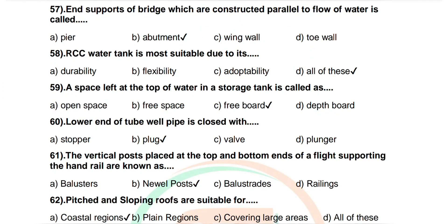Question number 57: End supports of bridge which are constructed parallel to flow of water is called. Options are pier, abutment, wing wall, toe wall. Correct answer: abutment.